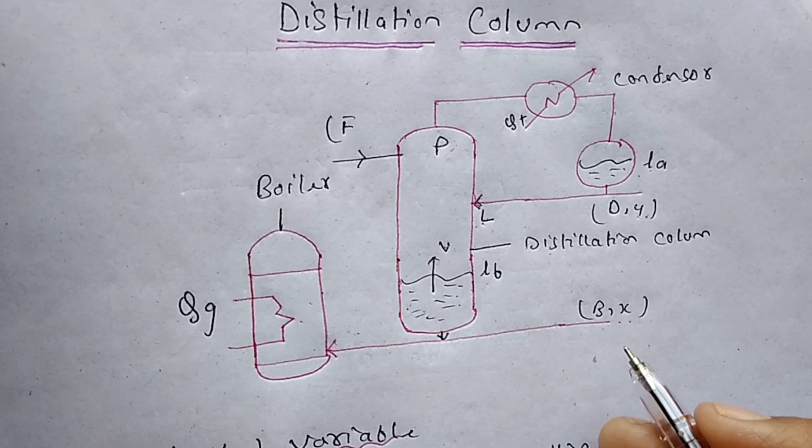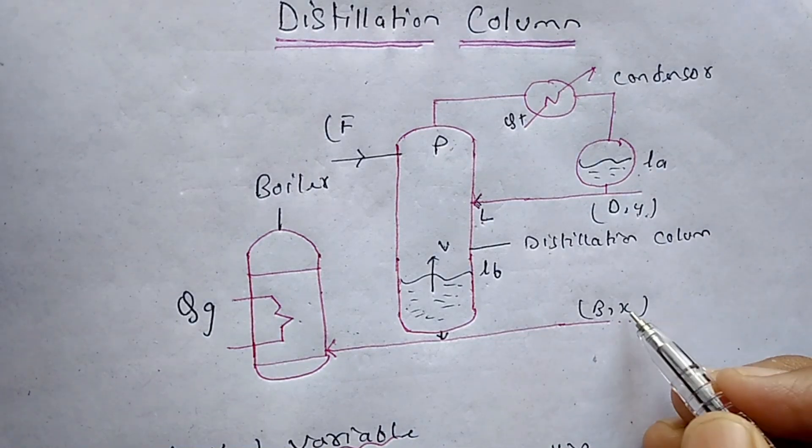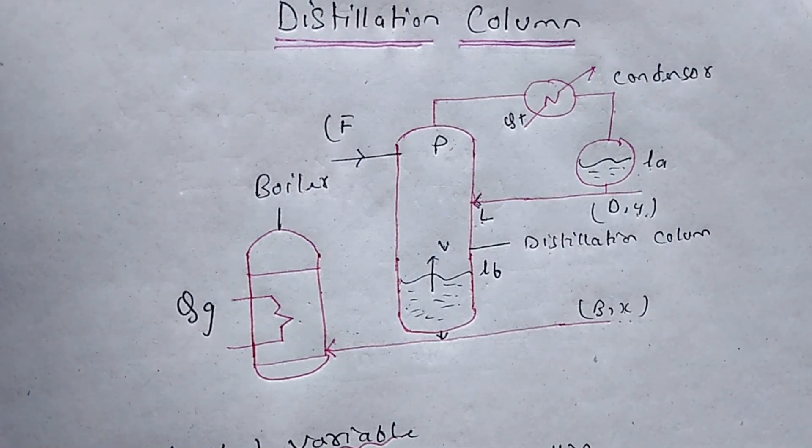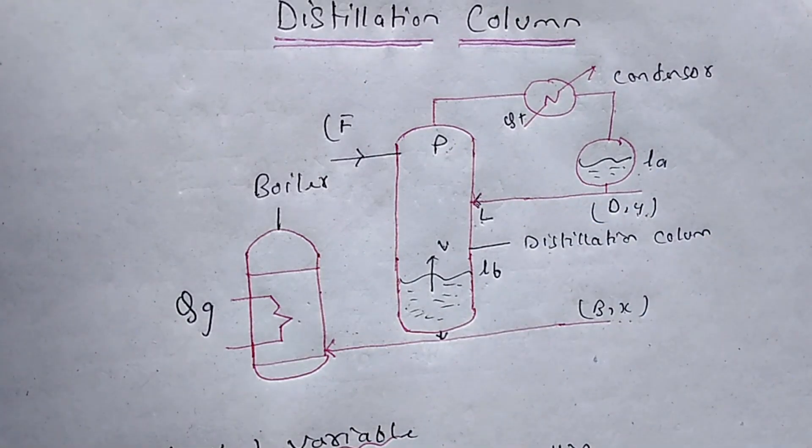First, the control variables. This Y is distillate composition. This X is the bottom composition. This LA is the accumulated level. This LB is the bottom level. And this P is the column pressure.